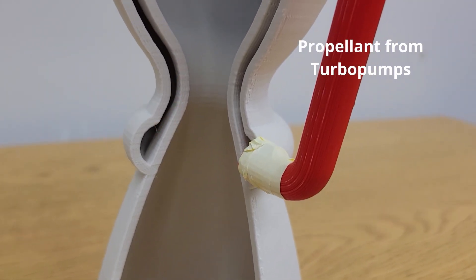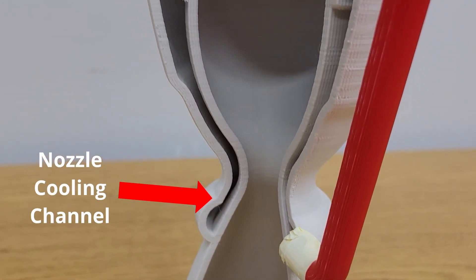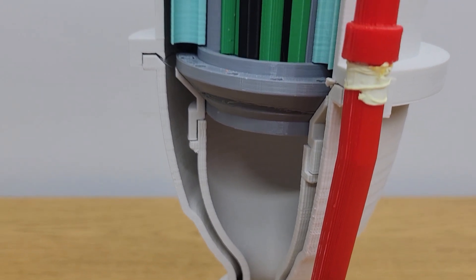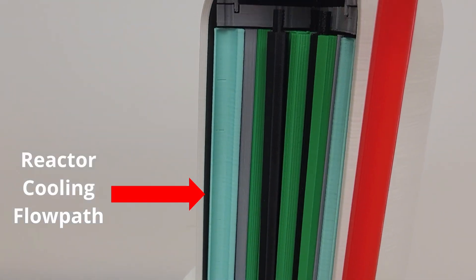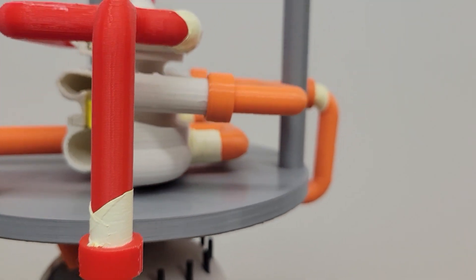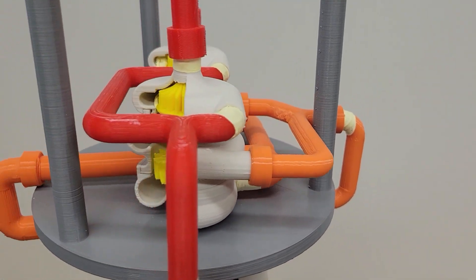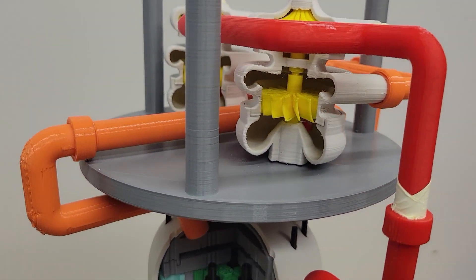The turbopumps send the propellant to a cooling channel surrounding the nozzle throat, where it then travels back up into and around the reactor. At the top, the now heated hydrogen propellant is drawn off to run the turbopump turbines before returning to the reactor.